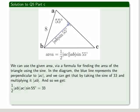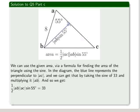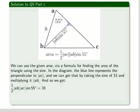And so we get a half times AB times AC times the sine of 55 is equal to the area of the triangle. That's the formula as given in the diagram there as well.